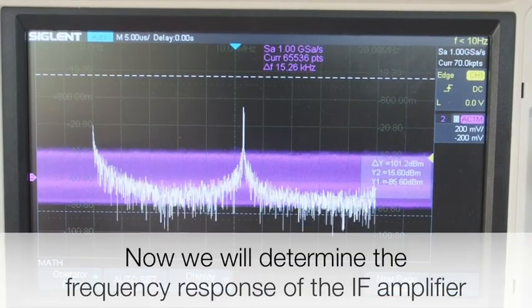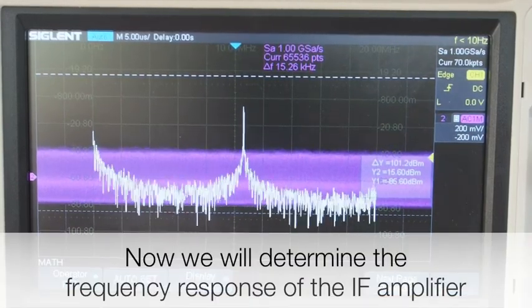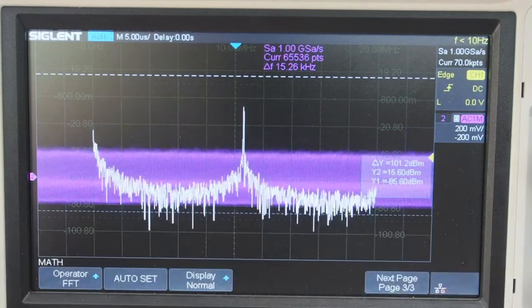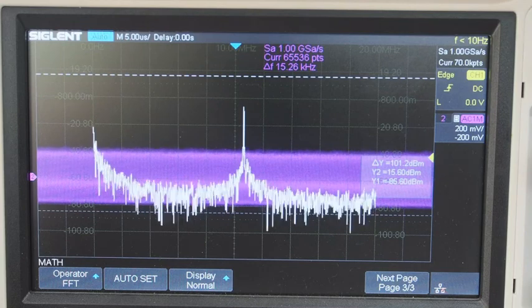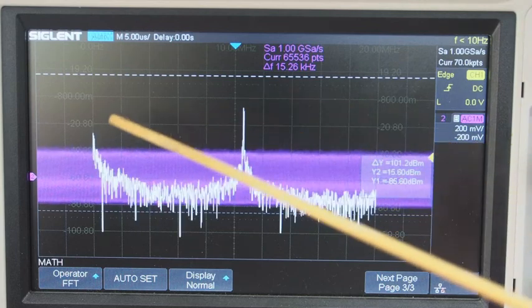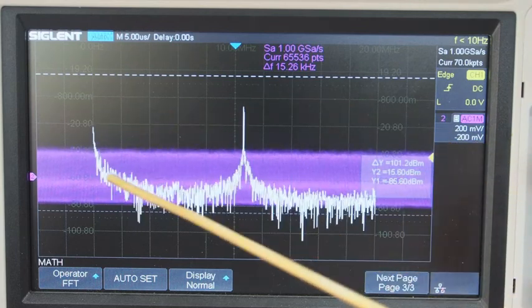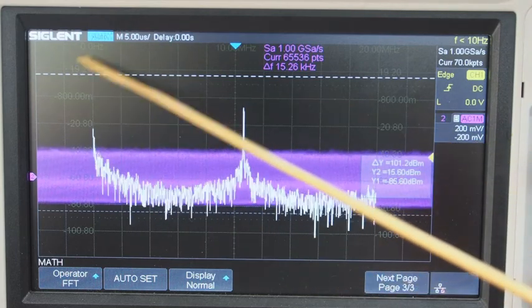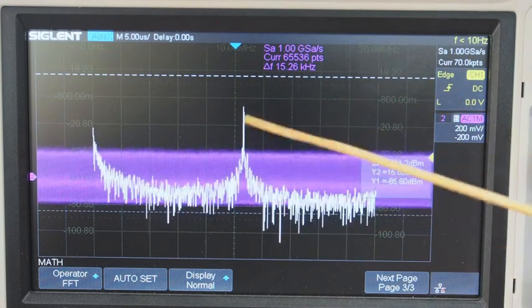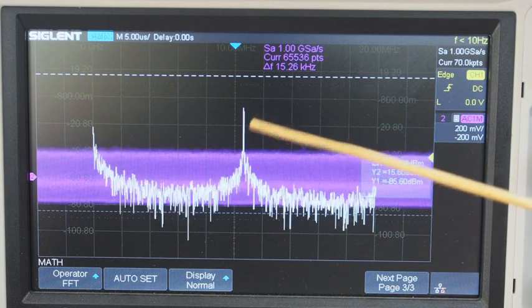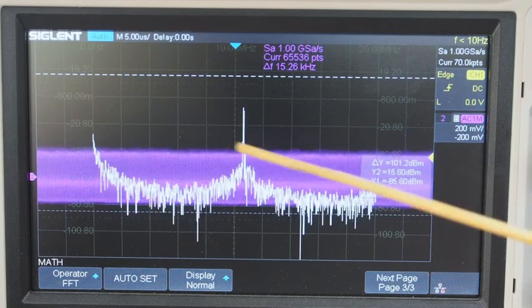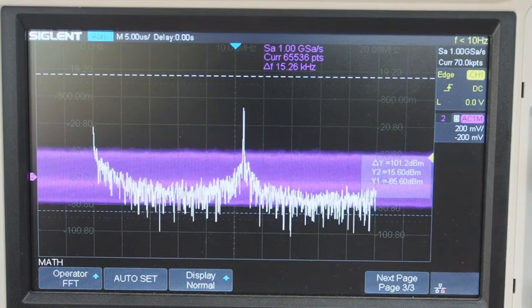I have set up the signal generator now to perform a sweep. It's not running yet. First I will run it by hand. The input signal is at DC now. And what you see here the spectrum is showing from DC, 0 Hz to 20 MHz. And what you see here the spike. This is the output signal of the IF amplifier. This is the intermediate frequency at 10.6 MHz on which it oscillates.